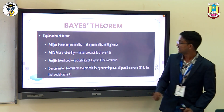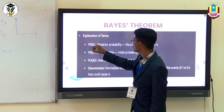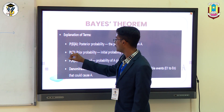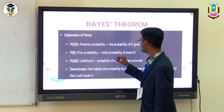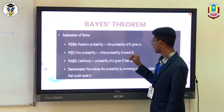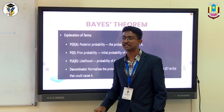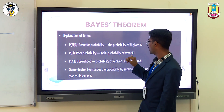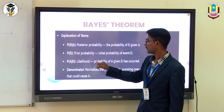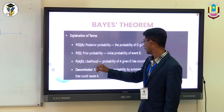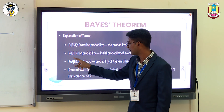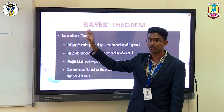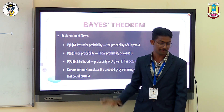The term probability of E1 given A is called posterior probability, and probability of event E1 is called the initial probability of event E1 — that is, no conditions have been applied to this event yet. That is why it is called the initial probability. And the term probability of A given E1 is called the likelihood. The denominator is the total probability of event A.